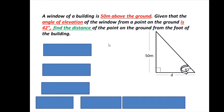For the given information, we will highlight the details and draw a right angle triangle. The window is 50 metres above the ground — this is the height. The angle of elevation is 42 degrees. We have to find the distance between the point on the ground and the foot of the building. In the right angle triangle, the height of the window is the opposite side, and the distance we need to find, labelled d, is the adjacent side.